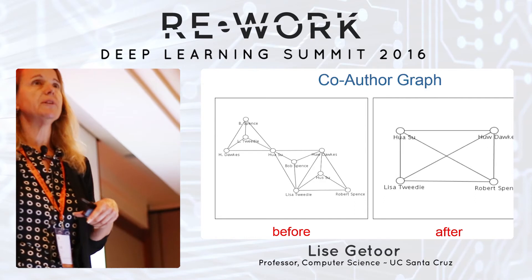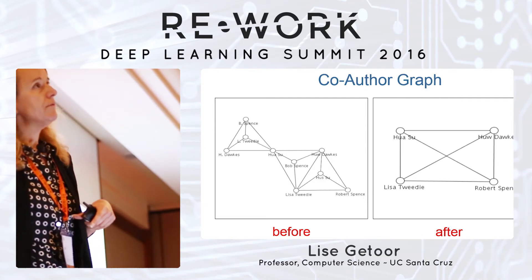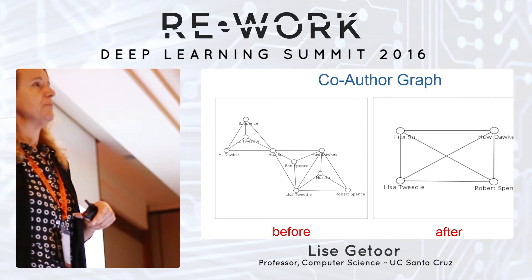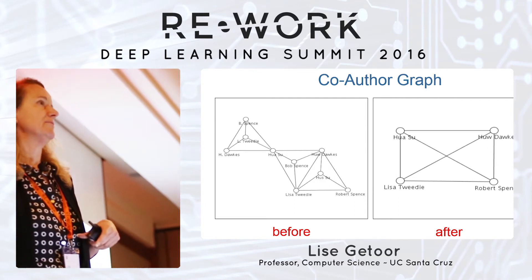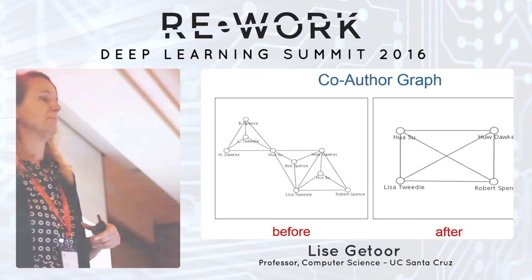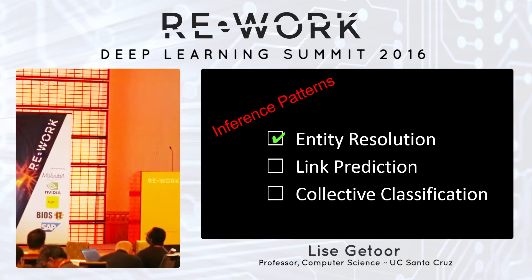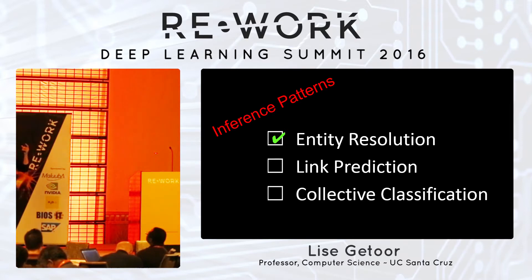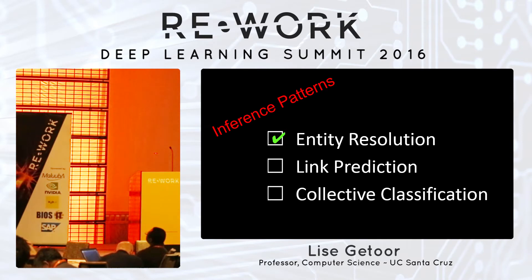This is a simple example, but there are real results where people have gotten incorrect scientific results from not having done this resolution properly. So if you're working with graph data, really think hard about whether you have this property in the data, because it's very important to correct for. You have to first do this process of figuring out what are the real nodes in your graph.